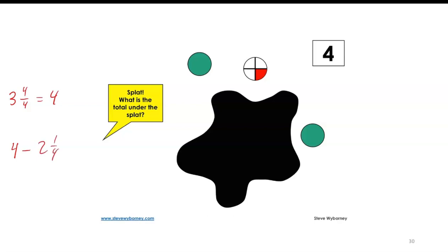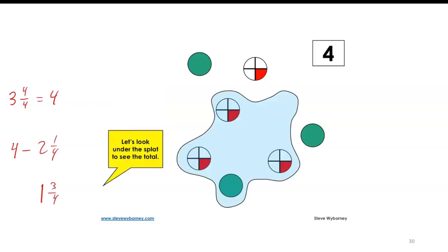This is essentially the missing addend model of subtraction where we know one number. Two and one fourth plus what equals four? I would need three fourths to make it a whole number. Two and one fourth plus three fourths is three, and I would need one more. So this comes out to be one and three fourths. If I uncover that splat, you can see there's one whole circle and three quarters that were covered up by the splat.